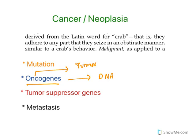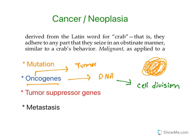Oncogenes — 'onco' means tumor. A gene is an active part of DNA, so oncogenes are the genes which cause tumor growth. In DNA, some genes control cell multiplication or cell division. When there is a mutation in this particular DNA, cell division continues to take place and results in tumors. In cancer, these oncogenes are highly activated and cells continue to multiply and form tumors.